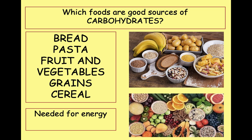Foods containing carbohydrates include bread, pasta, fruit and vegetables, and grains and cereal. In plants in particular, the carbohydrates they contain are called starch. So if you ever hear the word starch, starch is a carbohydrate. Sugar itself is also a carbohydrate. There are a couple of other carbohydrates you might come across — you might have heard of fructose or sucrose, and cellulose is another.